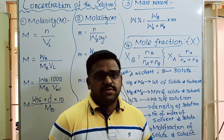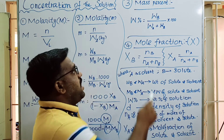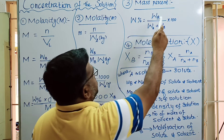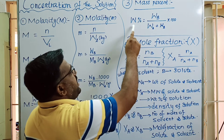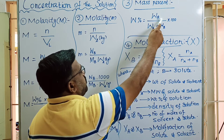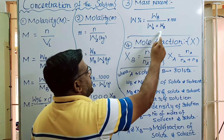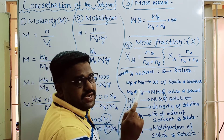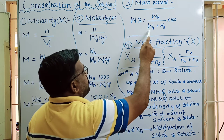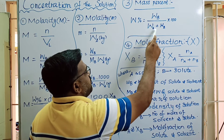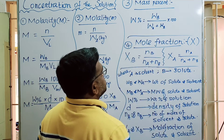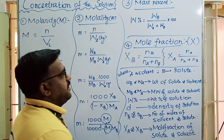The third concentration is mass percentage of the solution. Weight percent equals weight of solute divided by weight of solution, where weight of solution equals weight of solvent plus weight of solute, multiplied by 100.